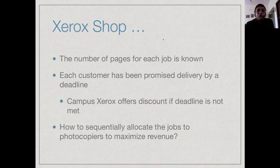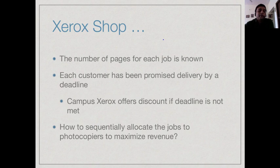All jobs have to run on the same machines that the Xerox shop has. So you can reorder things — you could take something which came later and put it earlier on the machine, hoping to finish it within its deadline and therefore not have to give a discount. And you could take something which is going to take longer and postpone it, accepting that you won't meet that deadline and giving up the discount on that job. The problem is how to do this schedule.